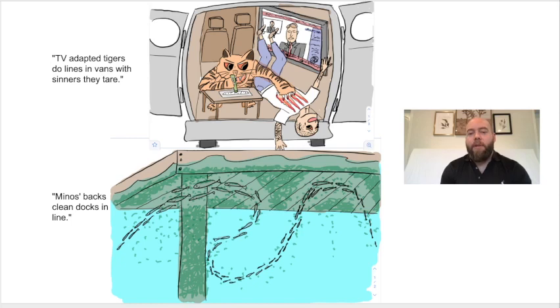And then below that, the PO drugs. The sentence is minnows' backs clean docks in line. The image there, you can see it's a dock dirty covered in algae. The minnows are in a line cleaning the dock with their backs.